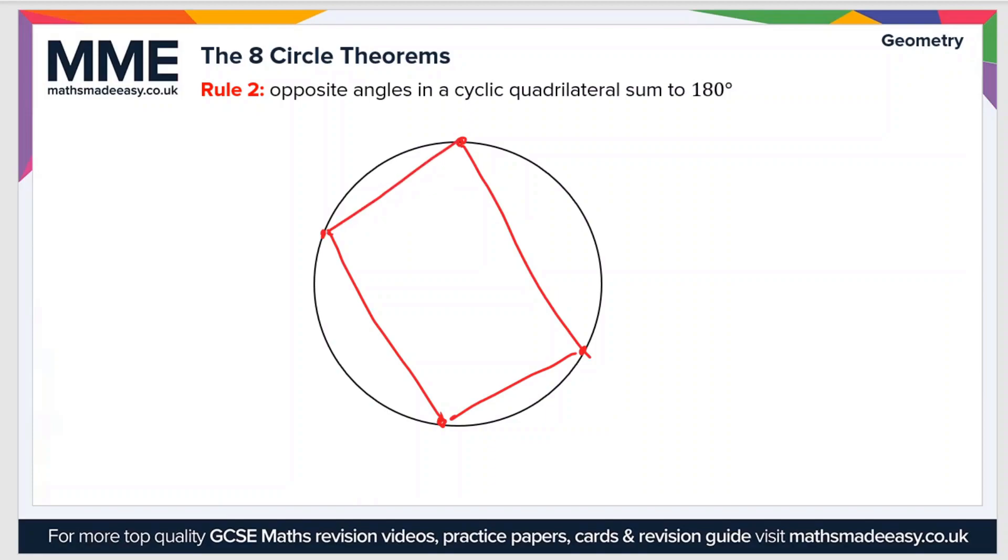This one looks like a rectangle, but it could be any quadrilateral. The opposite angles sum to 180 degrees. So if we call this one w and this one x, and we'll draw two more angles, we'll call this one y and call this one z.